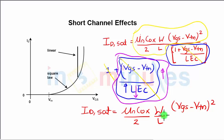Remember, 1 is ignored from the denominator because the length is small, so this term is very high. This leaves (Vgs - Vtn) / (L × Ec). Let's cancel out the length term and one (Vgs - Vtn) factor, and we have the critical electric field.